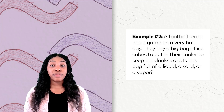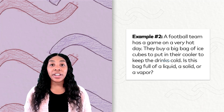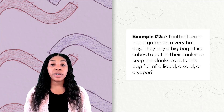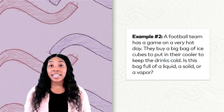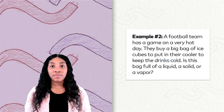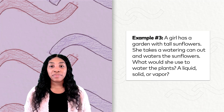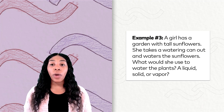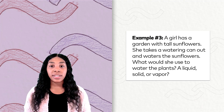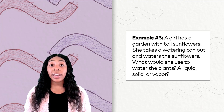Example number two: A football team has a game on a very hot day. They buy a big bag of ice cubes to put in their cooler to keep the drinks cold. Is this bag full of a liquid, a solid, or a vapor? Example number three: A girl has a garden with tall sunflowers. She takes a watering can out and waters the sunflowers. What would she use to water the plants — a liquid, solid, or vapor?